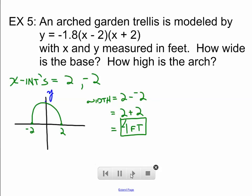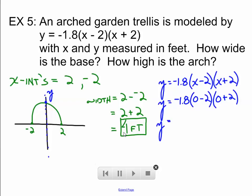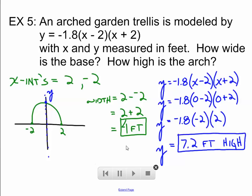Now, the height is a little bit different. The height is the y value of our vertex. We can find the height by plugging in the x value of our vertex, which is obviously 0. I don't think we have to do the math to figure that out. But we'll just plug 0 into this original equation that they gave us. So, 0 minus 2 and 0 plus 2, which is obviously going to be negative 2 and positive 2. We then multiply these 3 values and we get the height of the trellis, which is 7.2 feet. That's how high the trellis is and it is 4 feet wide.